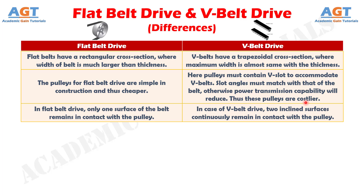Number 3: in flat belt drive, only one surface of the belt remains in contact with the pulley, whereas in case of V-belt drive, two inclined surfaces continuously remain in contact with the pulley.